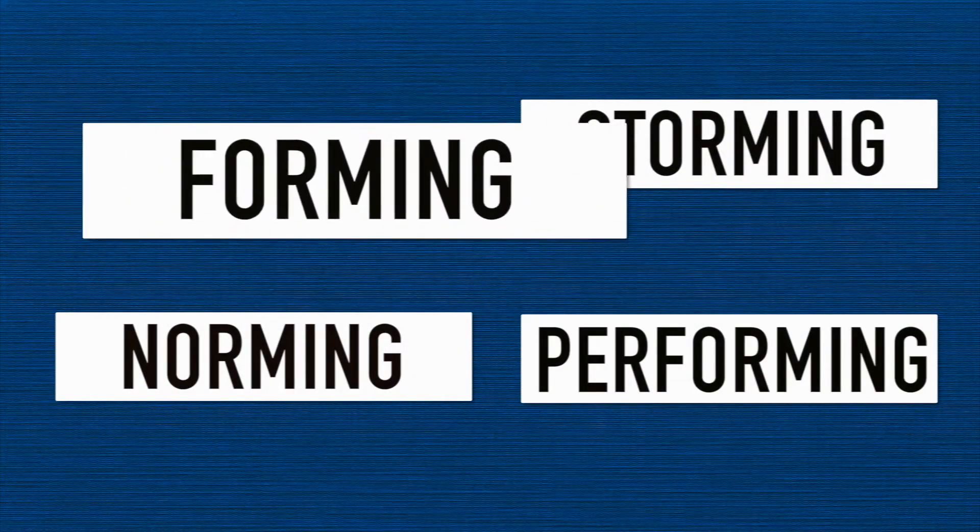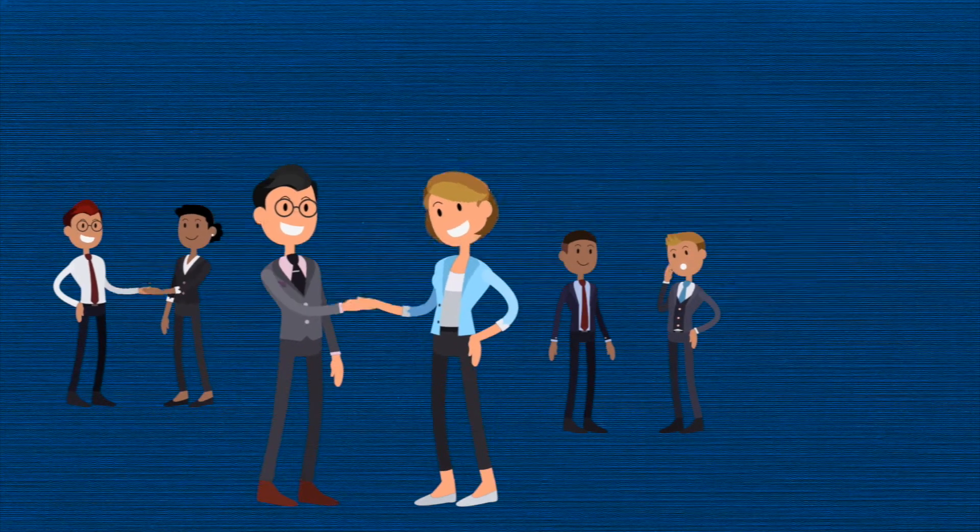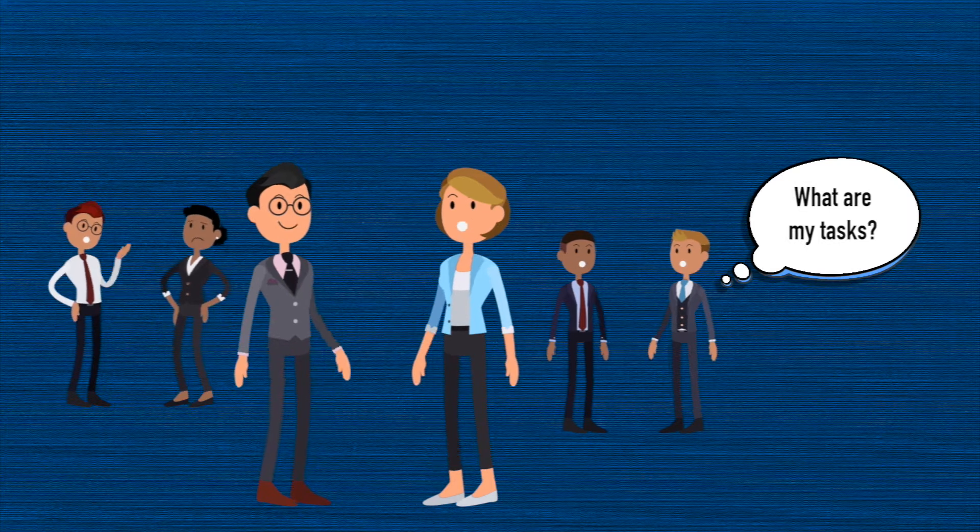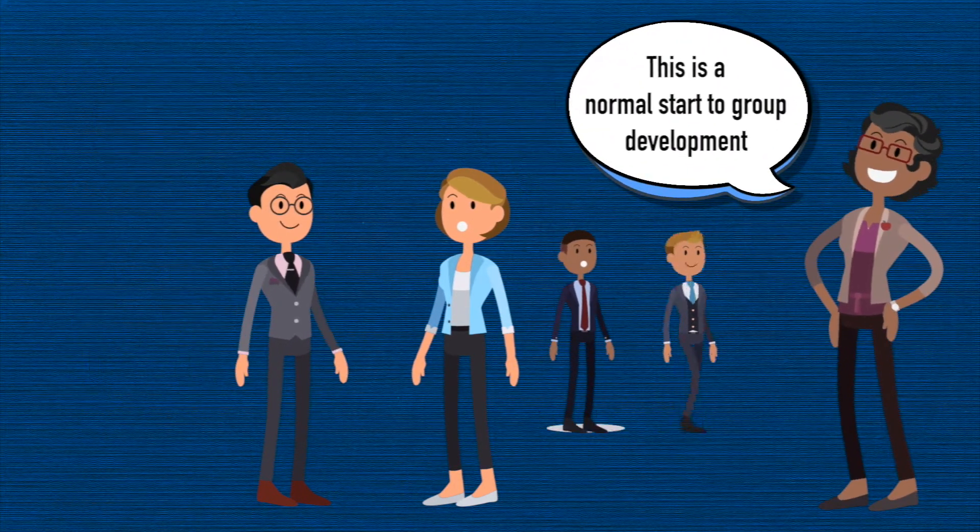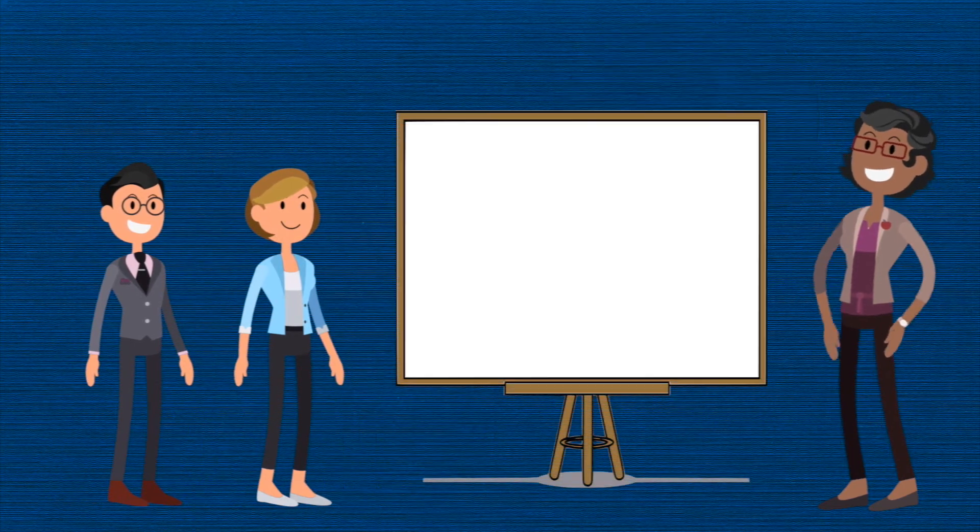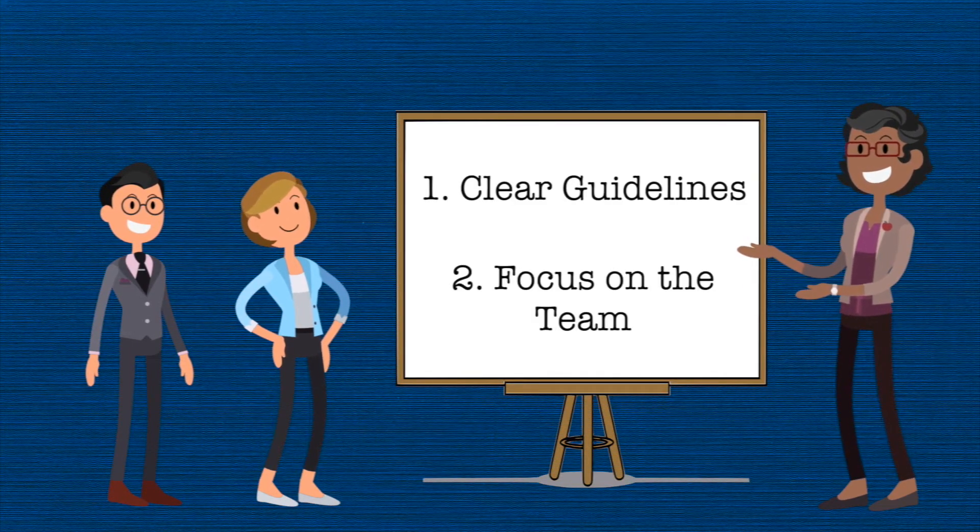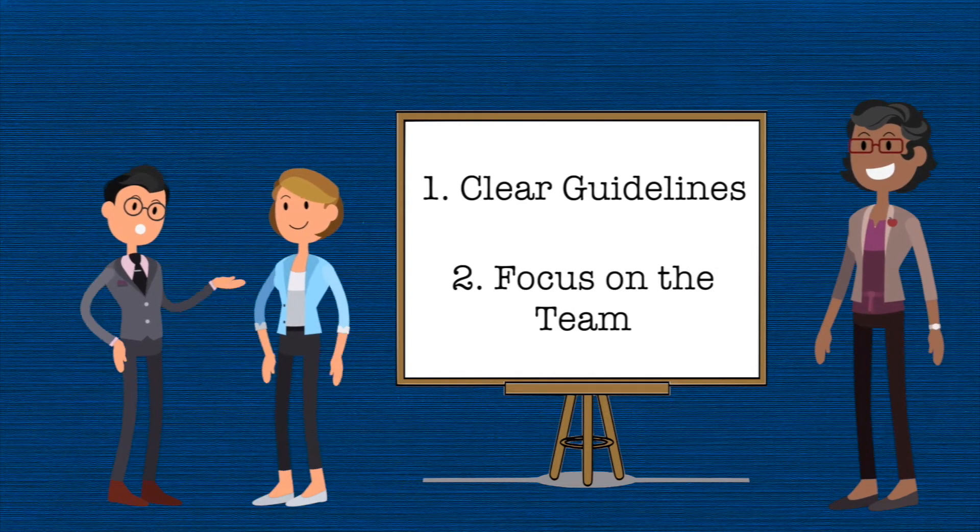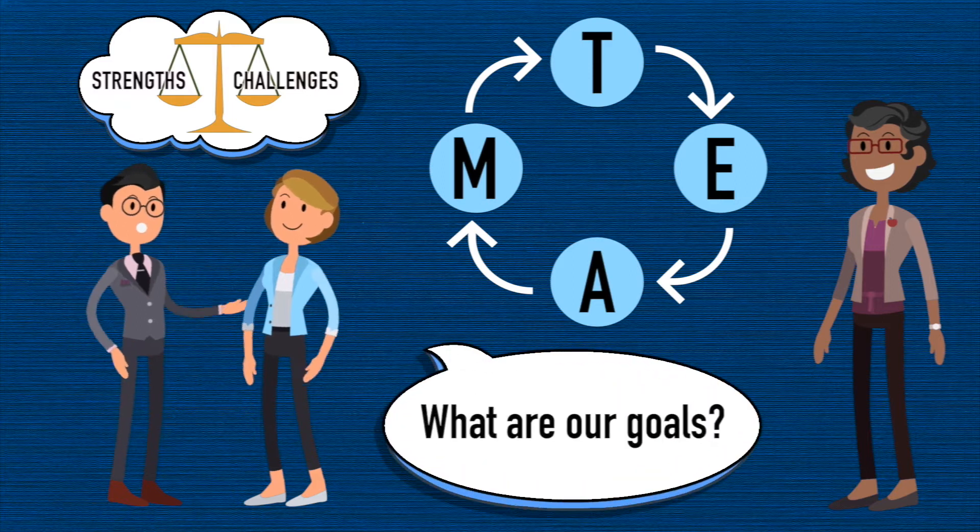The first stage of group development is forming. Students are becoming oriented to one another and their task. They are likely to be hesitant and depend on guidance. This is a normal start to group development, and at these beginning stages the group will benefit from clear guidelines and an intentional focus on themselves as a team. What are their strengths and challenges? How are they going to work together? What are their goals?